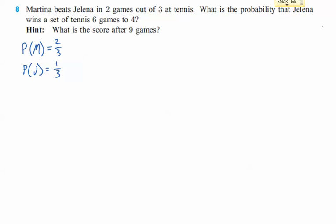So now we need to look at the probability that Jelena wins a set of tennis six games to four. Now, the common mistake is that people say, okay, this is easy. There's ten games. So, I'm going to use a binompdf and you're going to say, okay, in order to win six games, that means there are ten games.